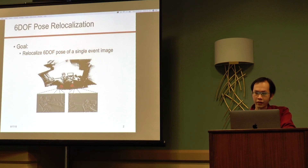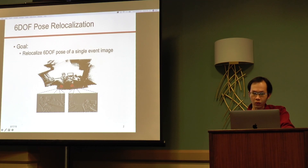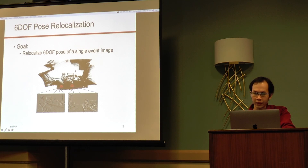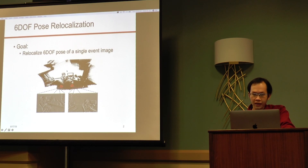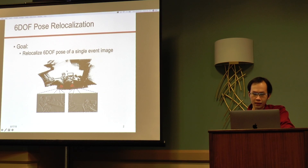We present a new method to relocalize the 6DOF pose of an event camera solely based on the event stream. Our method first creates an event image from a list of events occurring in a very short time interval, and then uses a Stacked Spatial LSTM Network to learn the camera pose.